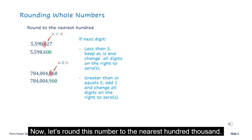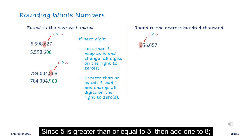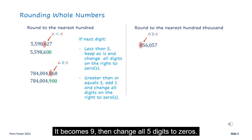Now let's round the number to the nearest hundred-thousand. Circle 8 and look at the digit right next to it — it's 5. Since 5 is greater than or equal to 5, add one to 8 — it becomes 9. Then change all five digits to zeros.